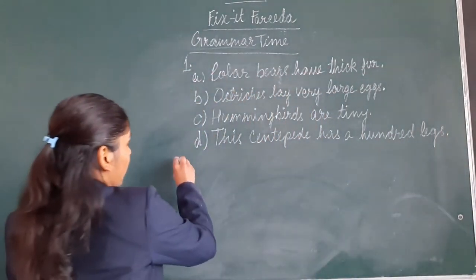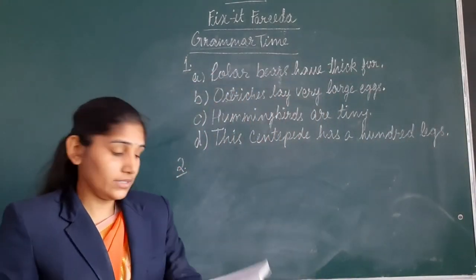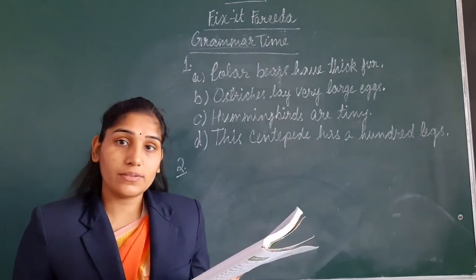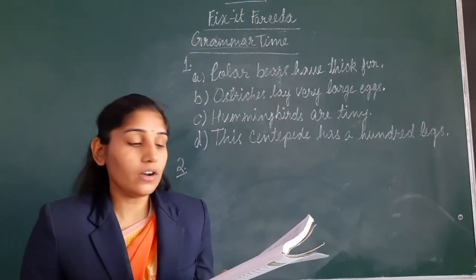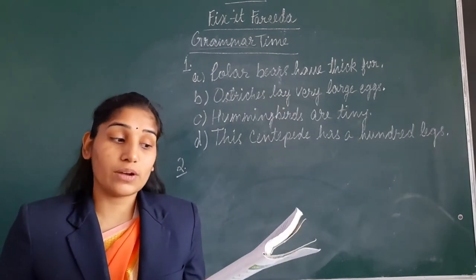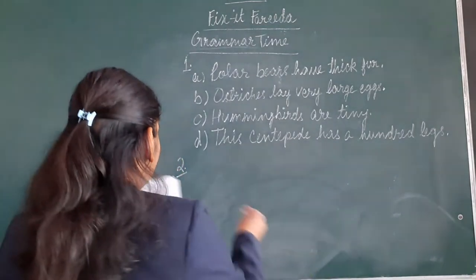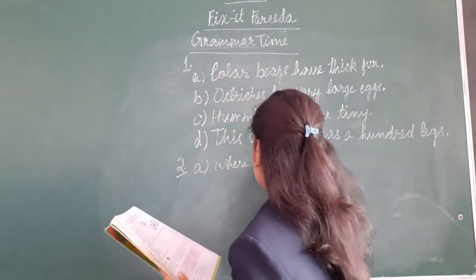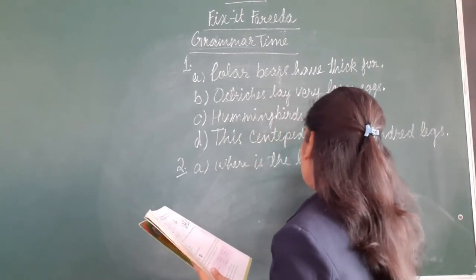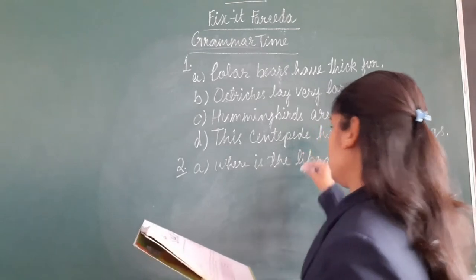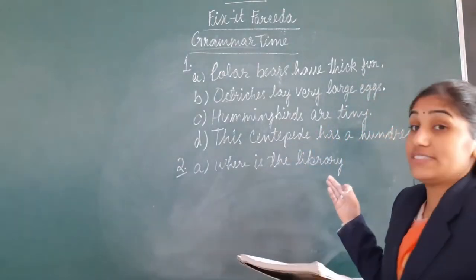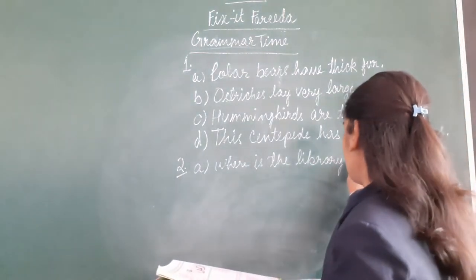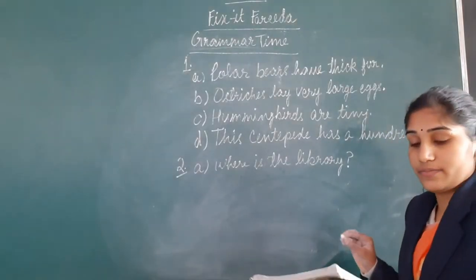In question number 2, what we have to do is put the correct end mark — that is, a question mark, an exclamation mark, or a full stop — in each box to complete the following sentences. Part A: 'Where is the library?' This is a question sentence, it is asking a question. So we will put a question mark at the end.